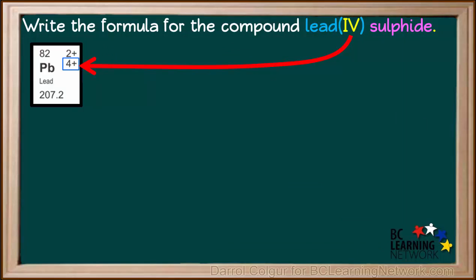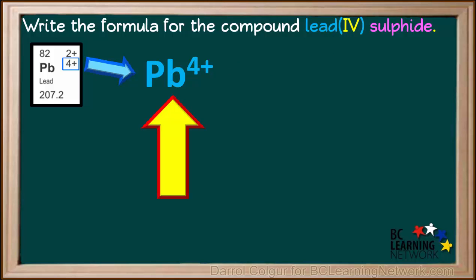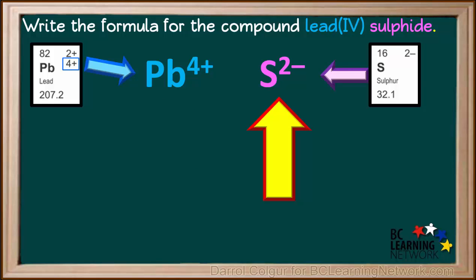The roman numeral IV means that the lead ion with a positive 4 charge is used. So the metal ion in this compound is Pb4+. And the non-metal ion is the sulfide ion, S2-.